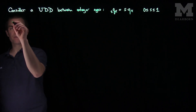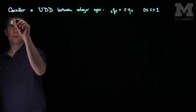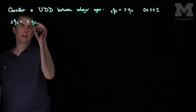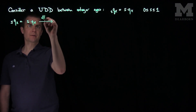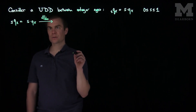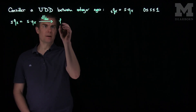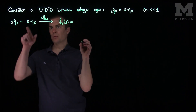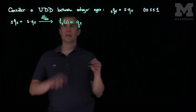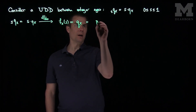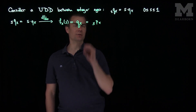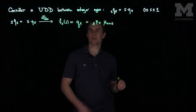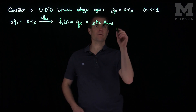Now if this is true then we also have the following relationship: s*q_x is equal to s times q_x, and if we do the derivative of this with respect to s we'll get two different things. The derivative of the left hand side will just be f_x(s), the PDF, and this will be equal to q_x under the uniform distribution. We know the PDF is equal to p_x(s), the survival function, times the force of mortality mu_{x+s}.